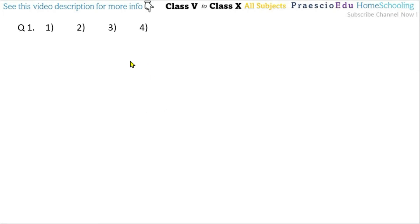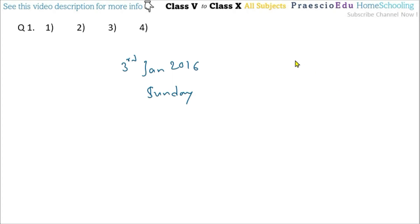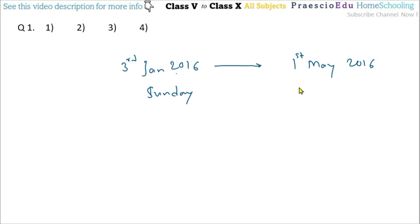Question number 1: the girl child day in the year 2016 fell on Sunday. Girl child day means 3rd January 2016 is on a Sunday. What will be the day on Maharashtra day in that year? Maharashtra day means 1st of May 2016. Since 2016 is a leap year, February has 29 days. From 3rd January to 1st May: January has 31 minus 3 = 28 days remaining, and then February has 29 days.